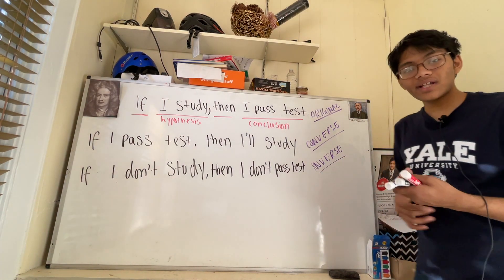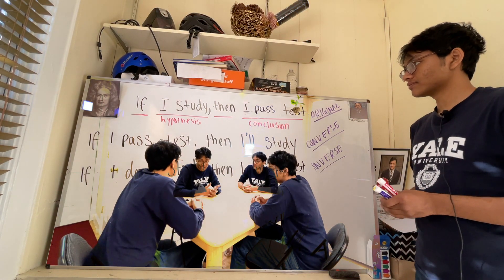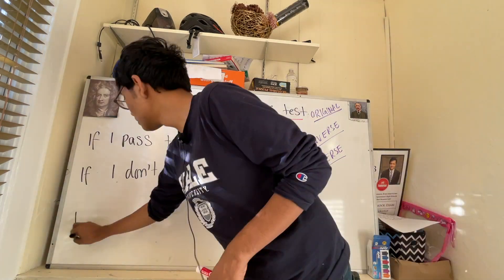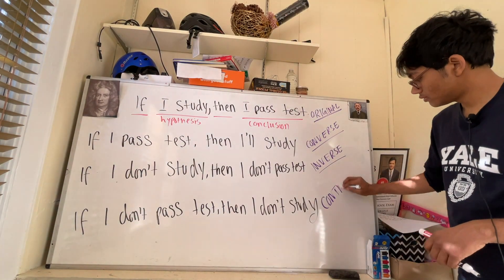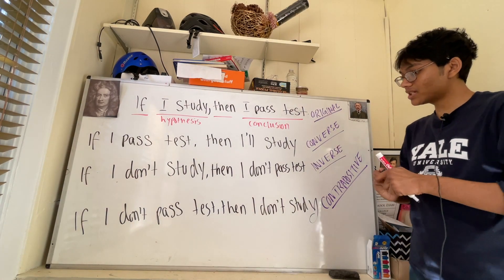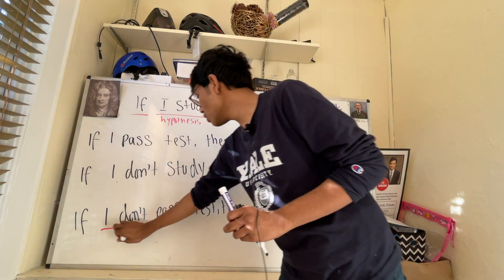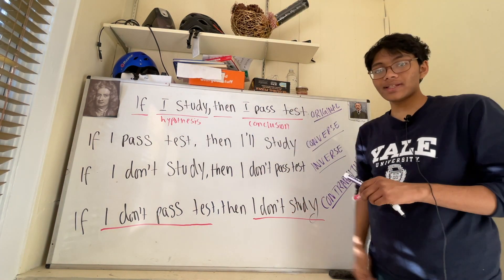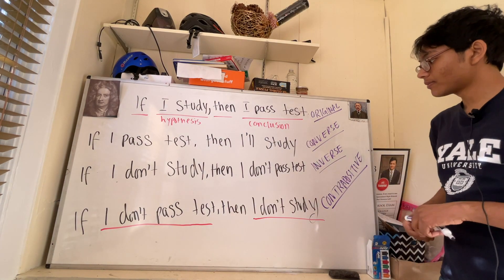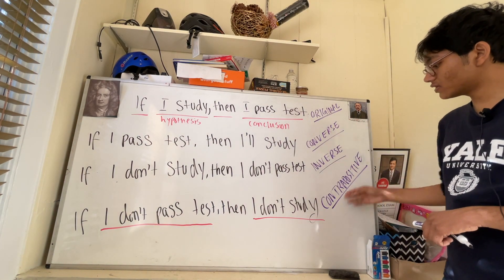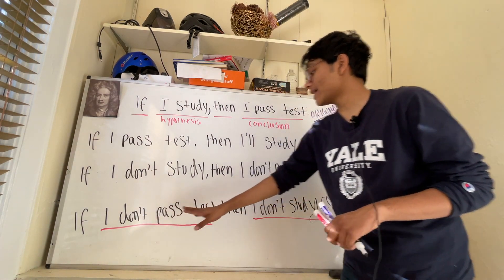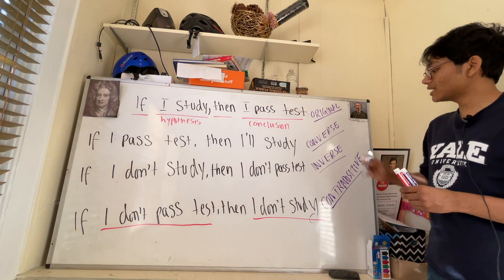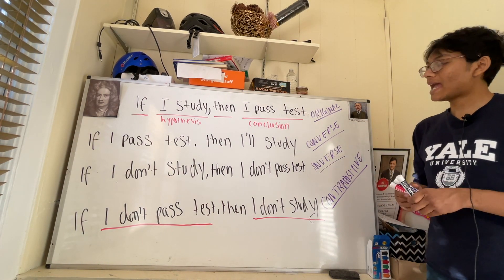The final robot says: if I don't pass the test then I don't study. This is called the contrapositive. Not only did we negate the conclusion and the hypothesis, but we switched them up. It's almost like if you combine a converse and an inverse, you get a contrapositive. So you say: if I don't pass the test then I don't study.